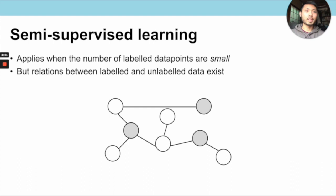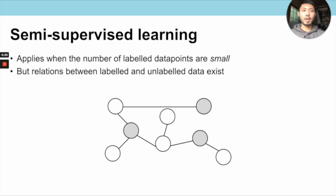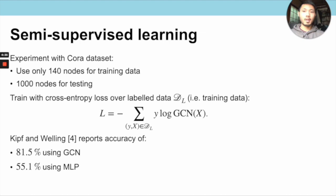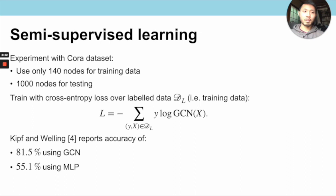An example where GCN is particularly useful is semi-supervised learning, where the number of labeled data points is small but relations between labeled and unlabeled data allow inference of unlabeled properties. On the CORA dataset using only 140 nodes for training and 1,000 for testing, Kipf and Welling report a staggering 81.5% accuracy using GCN compared to 55.1% using a vanilla multi-layer perceptron, clearly highlighting the importance of accounting for relational information in the graph.